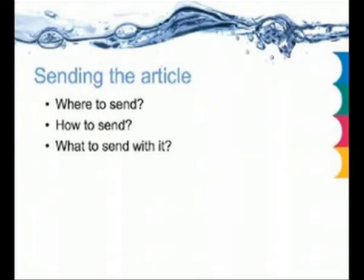Once you send your article, you need to know where you're going to send it and how to send it. In the past it was by mail or fax; now everything is electronic and you can send it online. What do you want to send with it? You need to send the copyright, the declaration, and the conflicts of interest. You need to know all these before you send the paper, because it could easily get rejected if you haven't sent all the relevant documents and signatures.